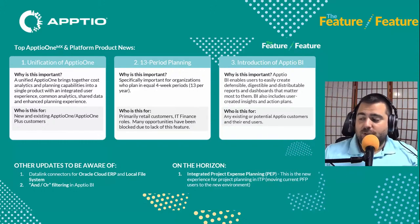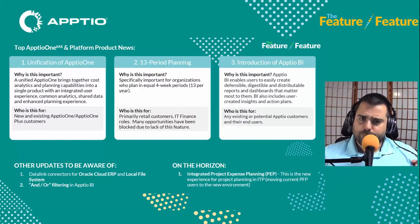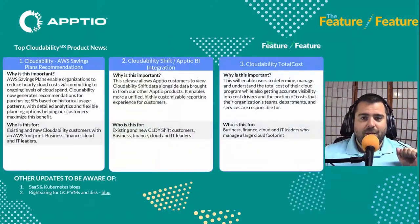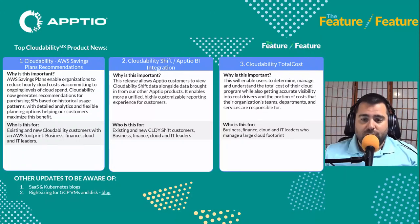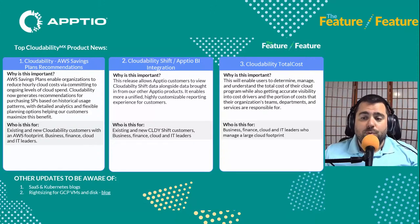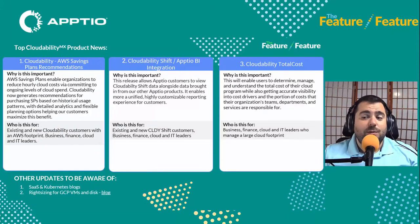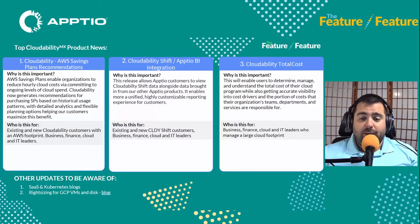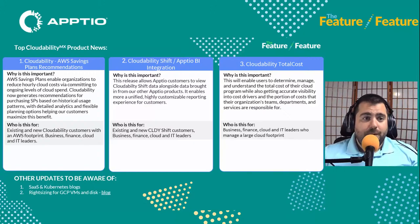On the horizon, there's going to be an integrated project expense planning coming to Aptio One as well. Moving on to Cloudability product news: we have AWS savings plan purchase recommendations for EC2 and Compute Savings Plans to maximize the benefit of any existing reserved instances and help reduce hourly rates. With this update, Cloudability users can tailor recommendations to organizational preferences by analyzing usage within relevant date windows and setting minimum thresholds for savings and utilization. It's a really big deal — pulling in those savings plan recommendations from AWS in a more customizable and granular way.